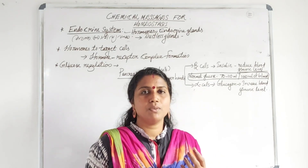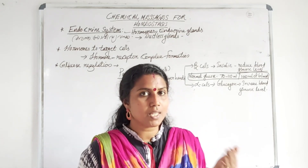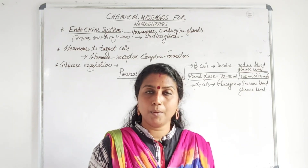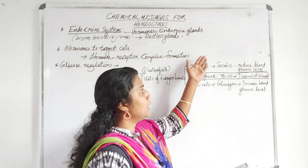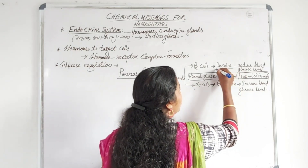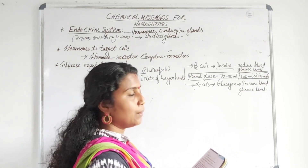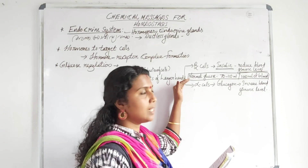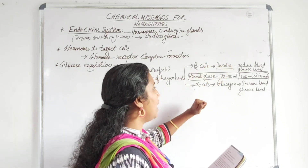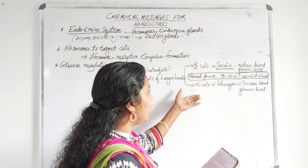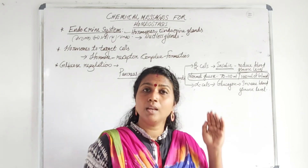Beta cells and alpha cells are used to control glucose levels. Insulin is produced from the beta cells of the pancreas. The alpha cells also produce another hormone called glucagon. So these are the two hormones produced from the pancreas.